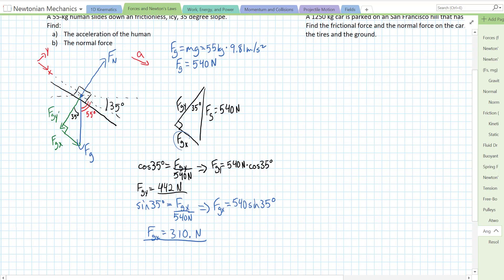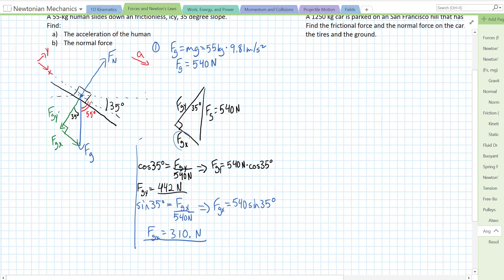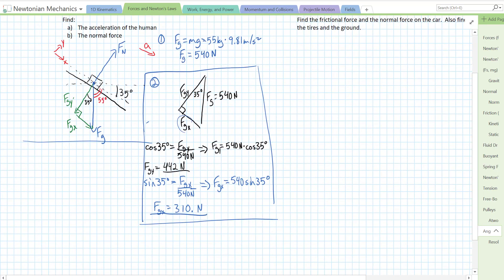Okay, so last of all, we need to find the acceleration and the normal force on our human. So, let's go off to the side. I'm going to go down below here. We're going to use Newton's second law in the x and y directions. So, in the x direction, that's going to give us the acceleration down the slope. So, let's set it up. Sum of the forces in the x direction equals mass times acceleration in the x direction. Left side, we substitute in all our x forces. We only have one. It's this fgx.